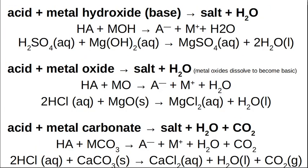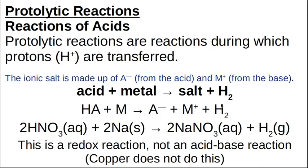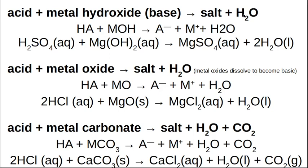We will look at neutralization next. But these general reactions — acid plus a metal gives salt and hydrogen gas; acid plus a base gives salt and water; acid plus a metal oxide gives salt and water; acid plus a metal carbonate gives salt, water, and carbon dioxide — you have to know them and be able to go from a general reaction to the specific. If given sulfuric acid and sodium carbonate, you must figure out the salt, water, and carbon dioxide. You just figure out the formula of the salt based on the anion from the acid and the cation from the metal carbonate.